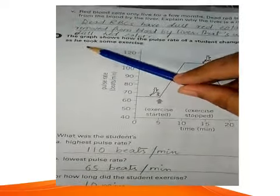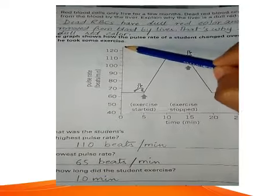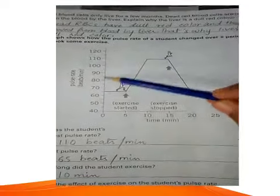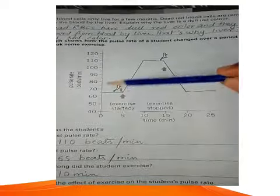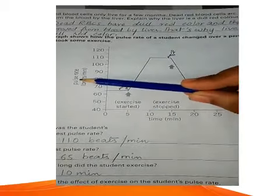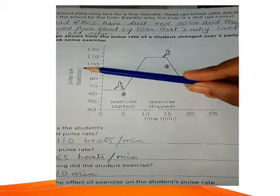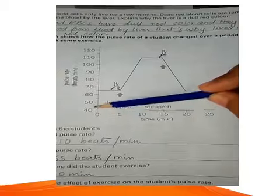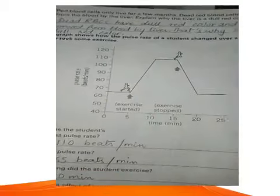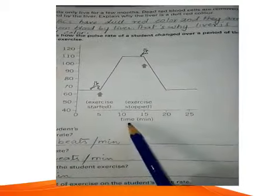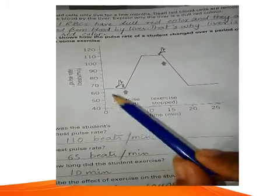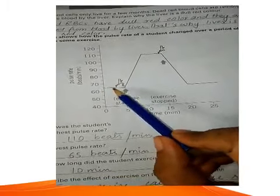Now question number nine. The graph shows how the pulse rate of a student changed over a period of time as he took some exercise. Now look at the graph. The y-axis shows the pulse rate in beats per minute. This is the time in minutes. At five minutes, the boy started his exercise.